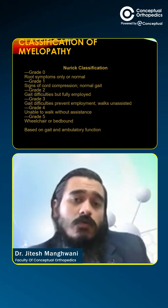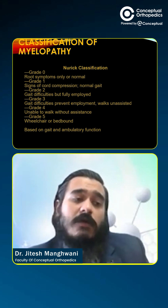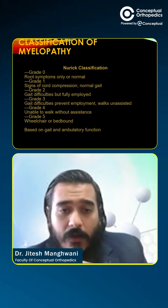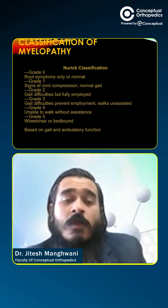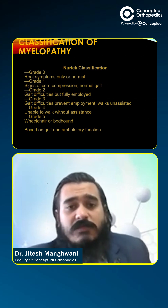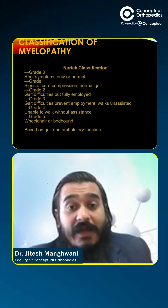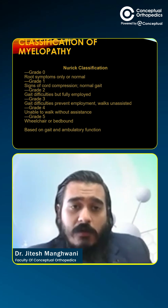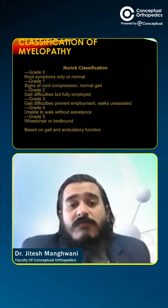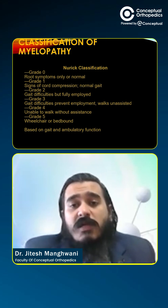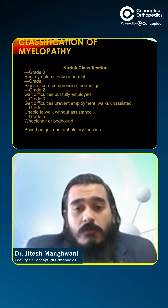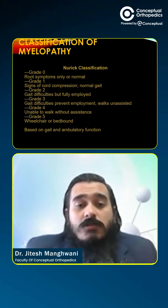Grade 0 is when there are root symptoms only — the patient may have compression resulting in myelopathy pain in a particular dermatome or motor weakness. Grade 1 is when the patient has signs of spinal cord compression but the gait is normal. Grade 2 is when the patient has gait difficulty but is fully employed. Grade 3 is when gait difficulties prevent employment but the patient works unassisted. Grade 4 is when the patient is unable to work without assistance. Grade 5 is when the patient is wheelchair or bed bound.